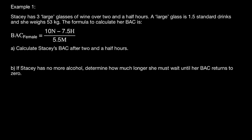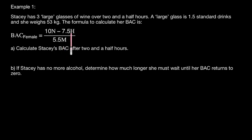Let's have a look at some examples. In Example 1, Stacy has three large glasses of wine over two and a half hours. A large glass is 1.5 standard drinks, and she weighs 53 kilograms. The formula for BAC for a female is: (10N − 7.5H) ÷ (5.5M), where M is the mass, H is the hours, and N is the number of standard drinks. I'm going to underline some important points in the question.